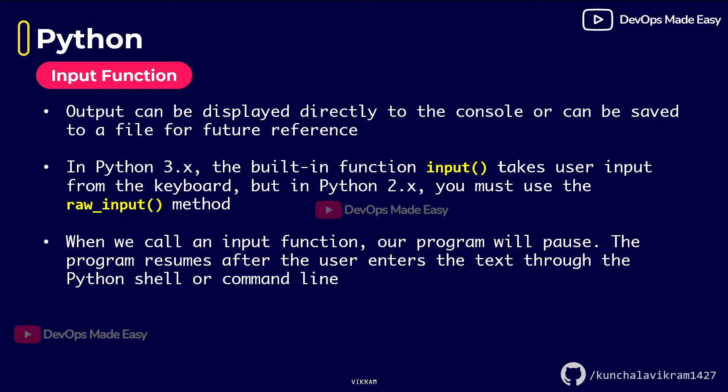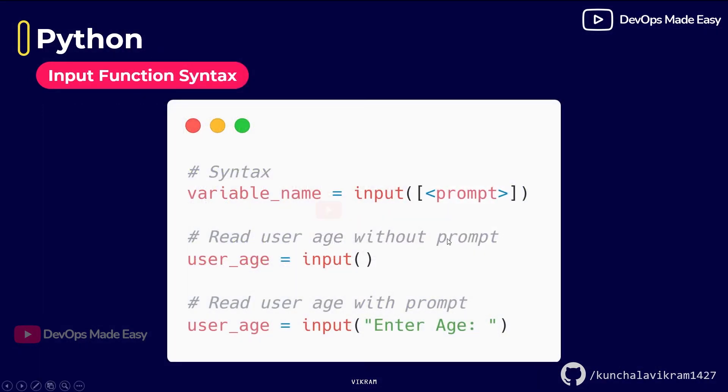In Python 3.x the built-in function called input takes user input from the keyboard, but in Python 2.x you must use the raw_input method to read user input. When we call the input function, our program will pause — until the user inputs something from the keyboard, the program is completely halted. This is the syntax: the keyword input with brackets, and inside the brackets you can include any prompt text.